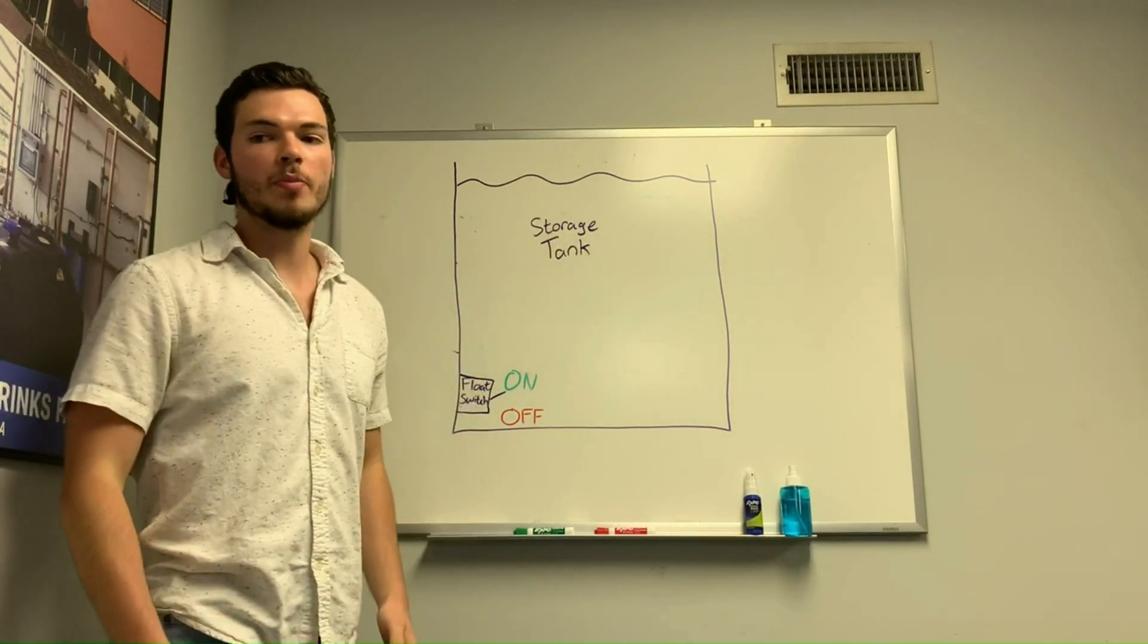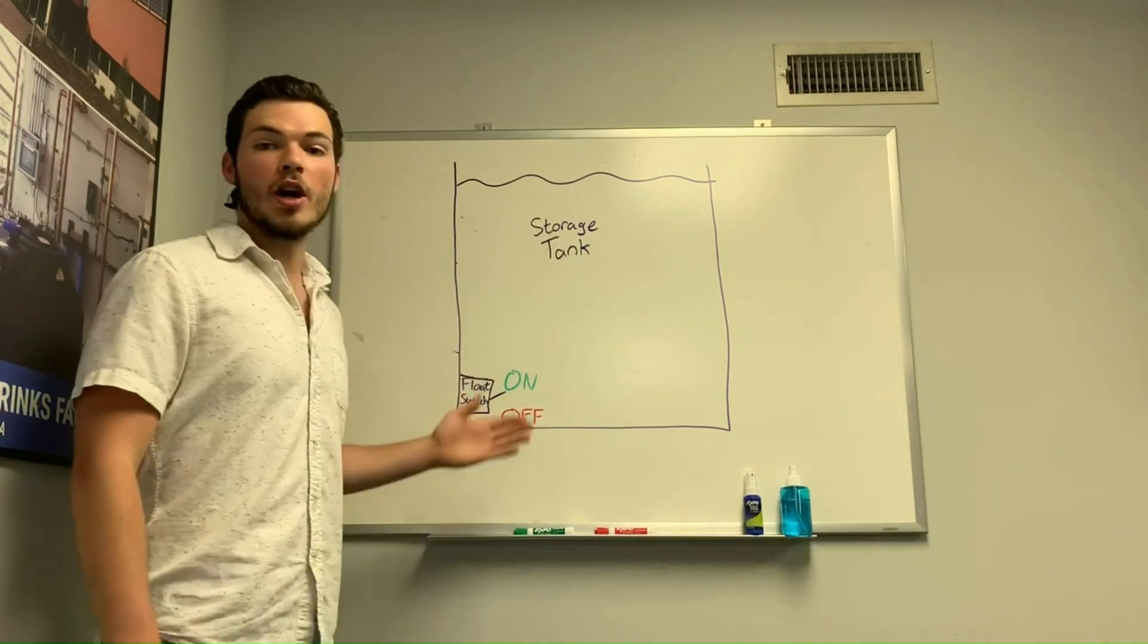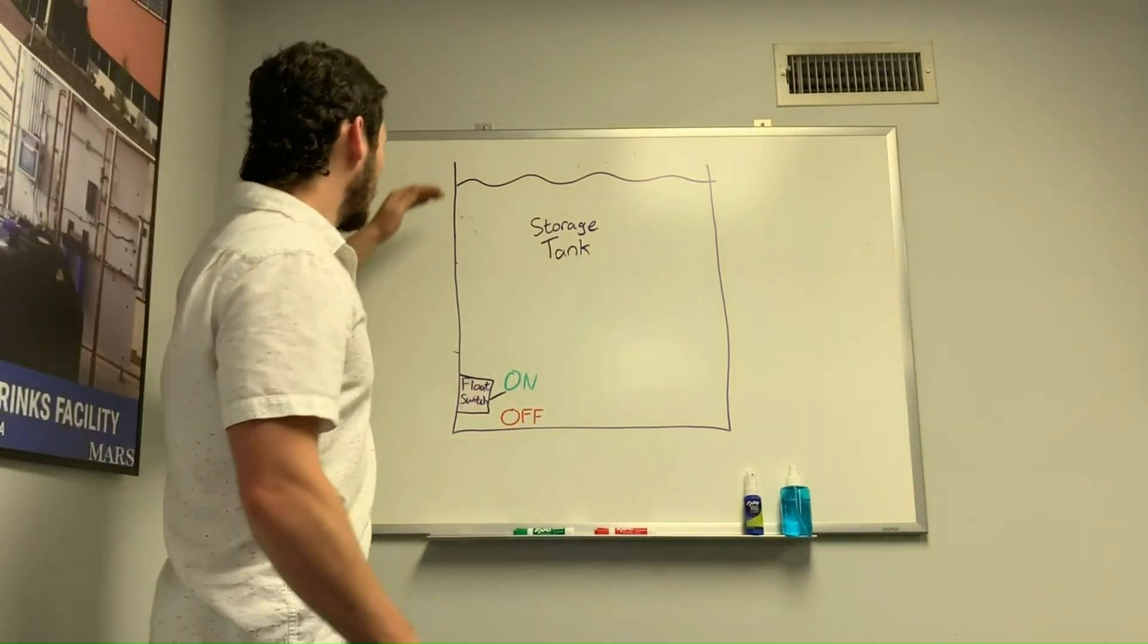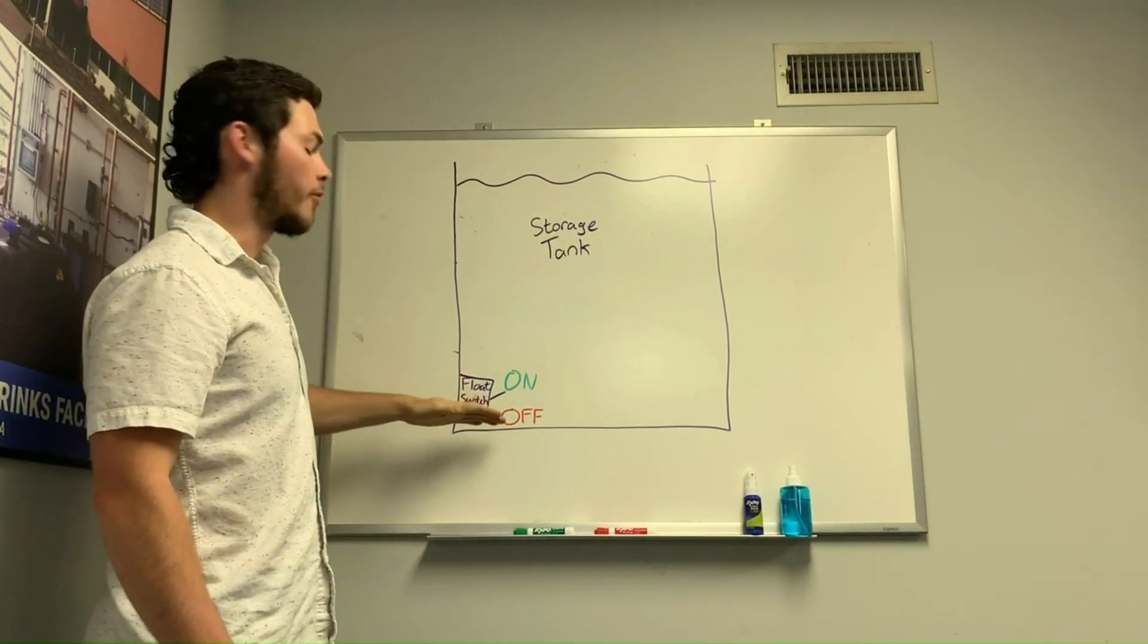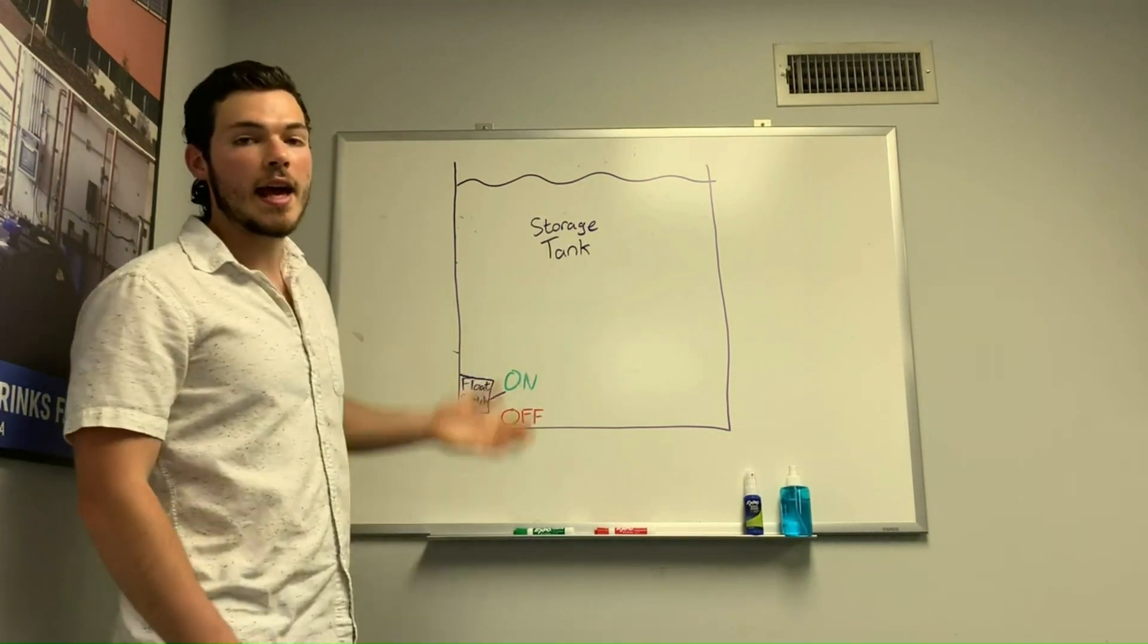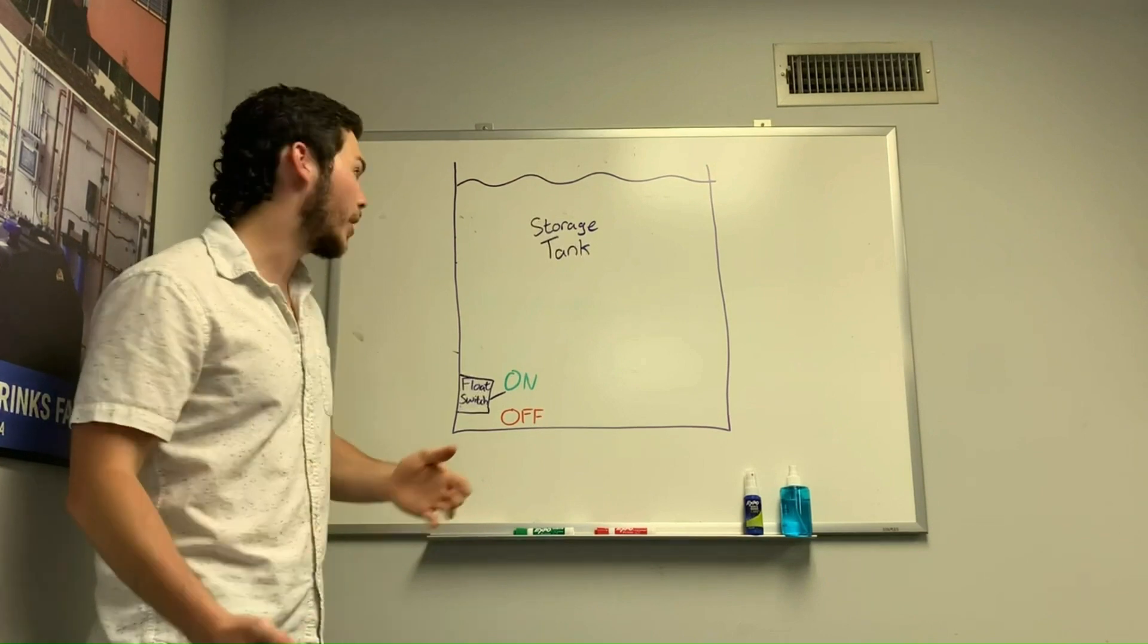There's normally open and normally closed float switches. Here's an example of the normally open float switch. With the normally open float switch, when the water level is above your switch, the switch floats up into the on position. This essentially tells your pump that it's okay for the pump to continue pumping because there's enough water in your tank.